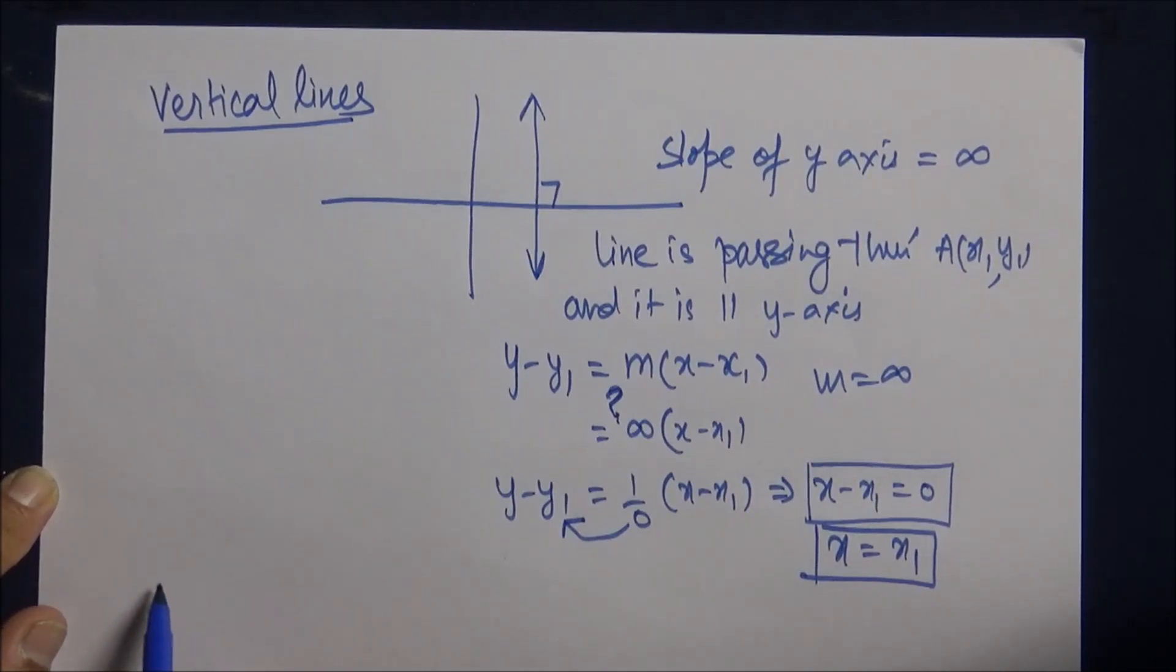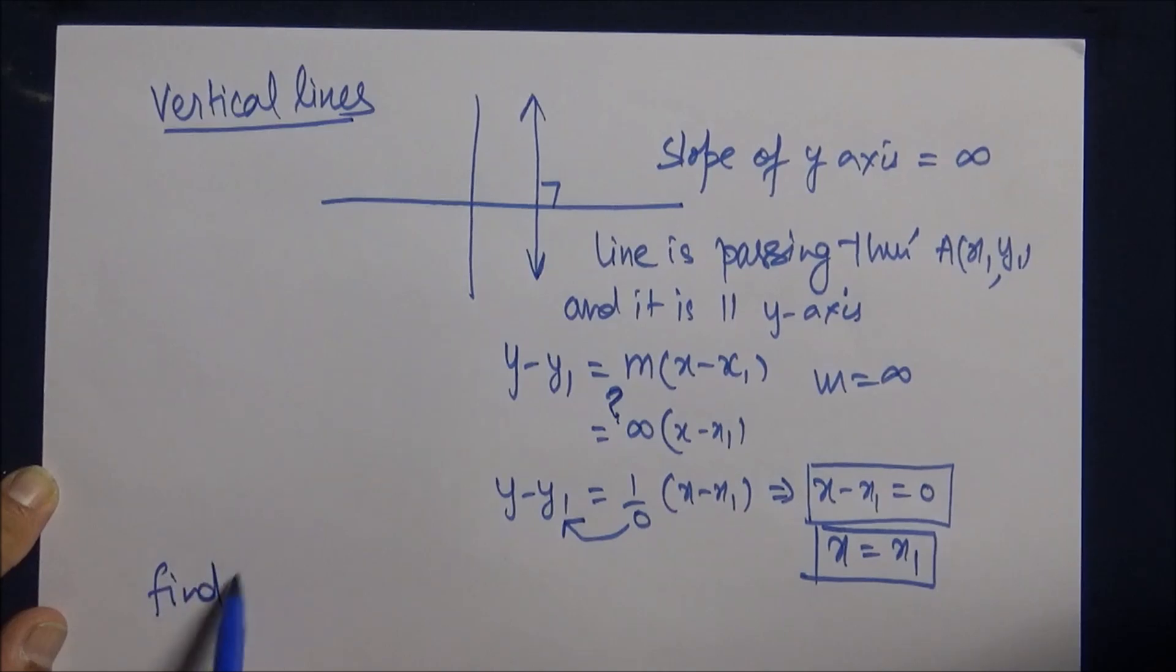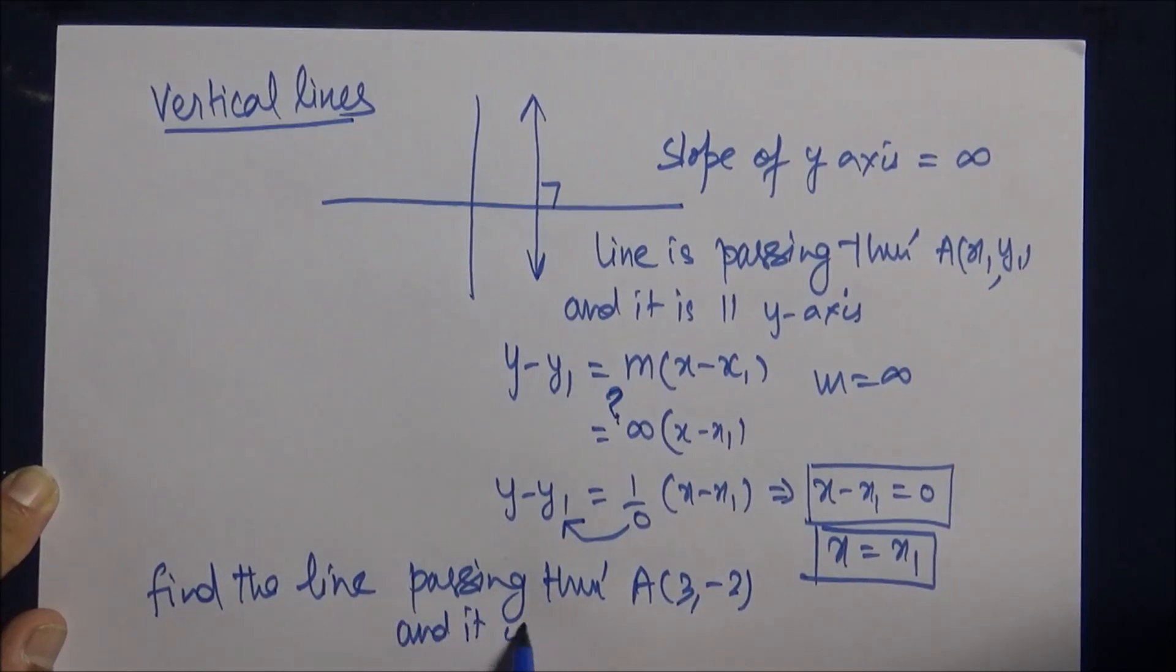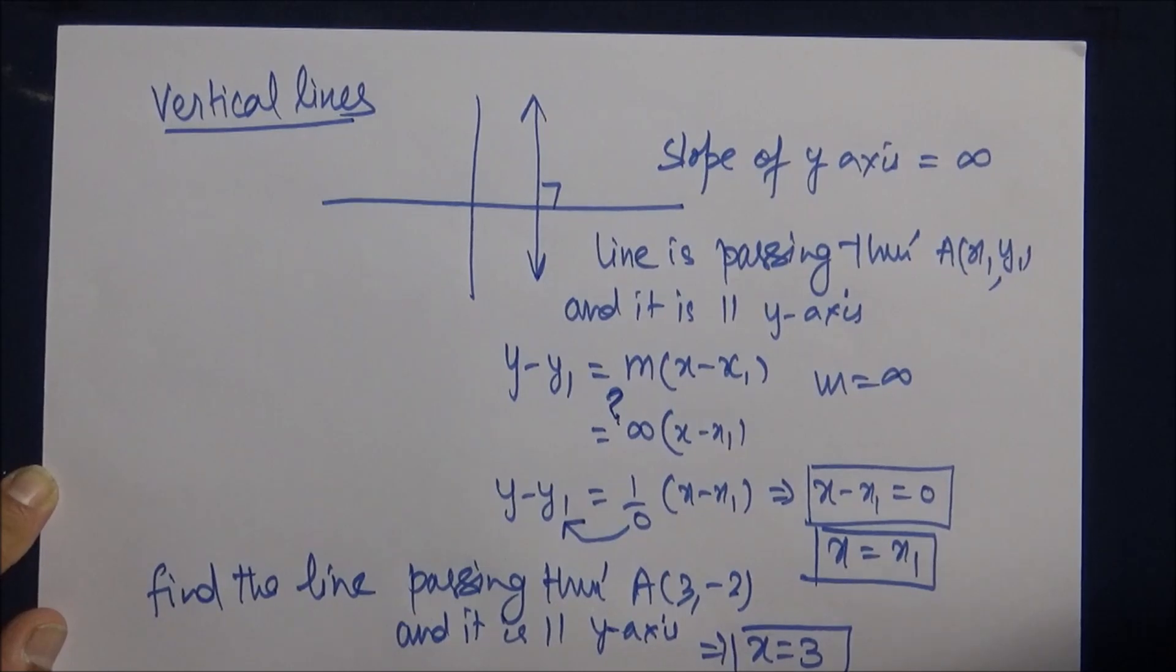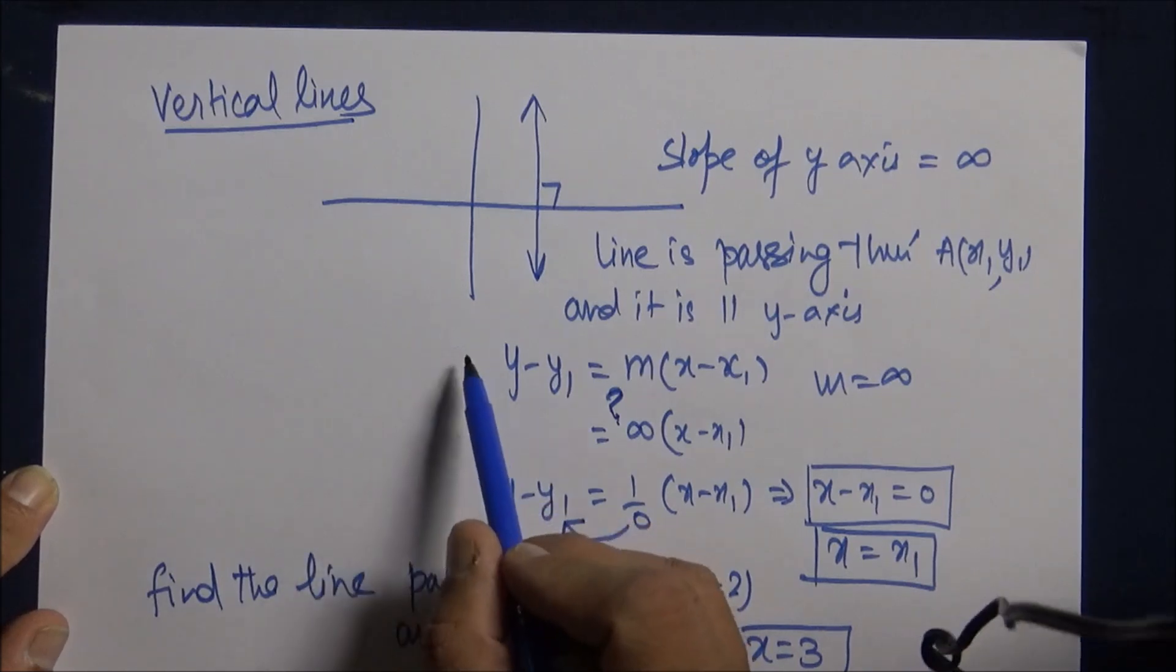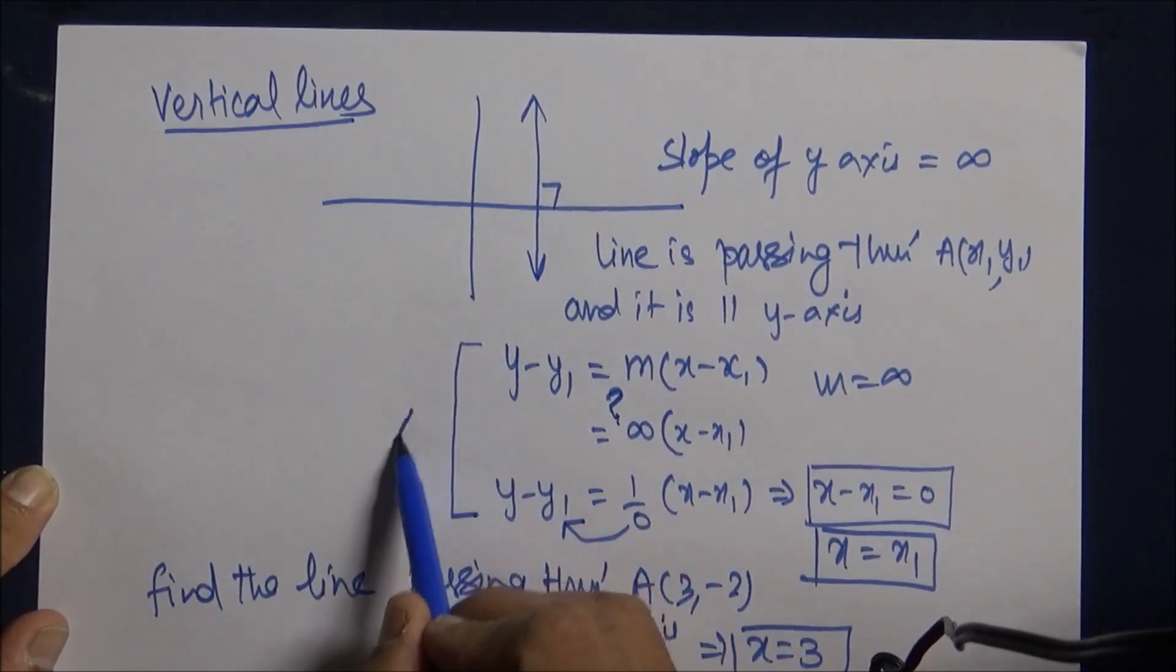If they give you a question: find the line passing through (3, -2) and it is parallel to y-axis. The equation will simply be x equals 3 because all the lines which are parallel to the y-axis will be of the form x equals x1, and there is no need to give this kind of presentation.